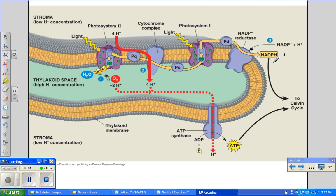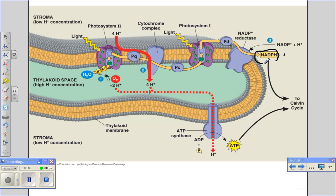Before we move on to the Calvin cycle, we want to make sure that we understand that the NADPH and the ATP produced by linear electron flow is essential for the functioning of the Calvin cycle.